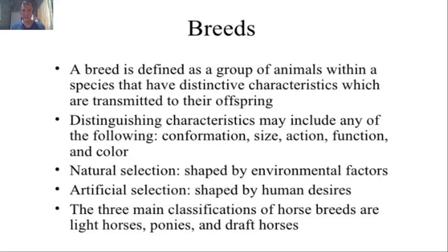Distinguishing characteristics may include any of the following: conformation — meaning the shape and build of the body, whether stocky or elongated — size, action, function, and color. Natural selection is when animals breed without human intervention, shaped by environmental factors. Breeds are created through natural selection when animals breed naturally within their environment.